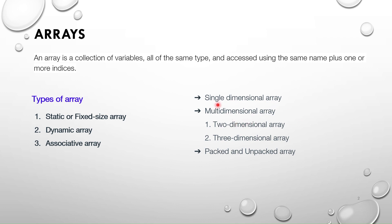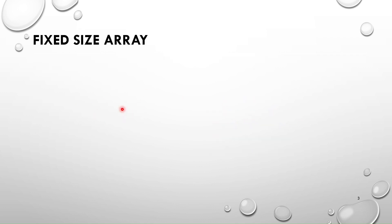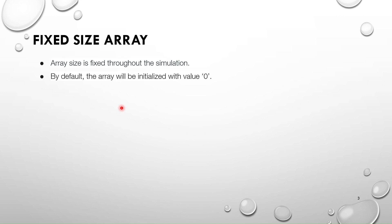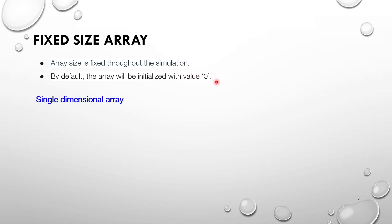The first type is fixed size array. As the name suggests, the size of the array is fixed throughout the simulation. By default the array will be initialized with value zero, so if you access an element before assigning a value, you will get zero.